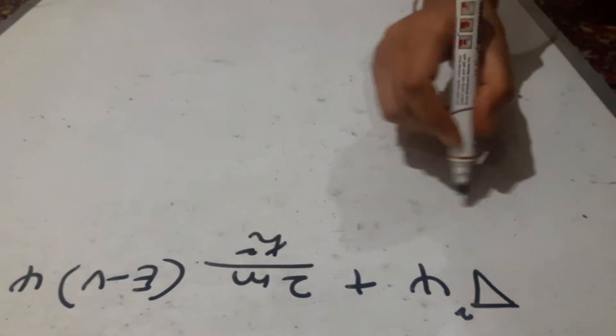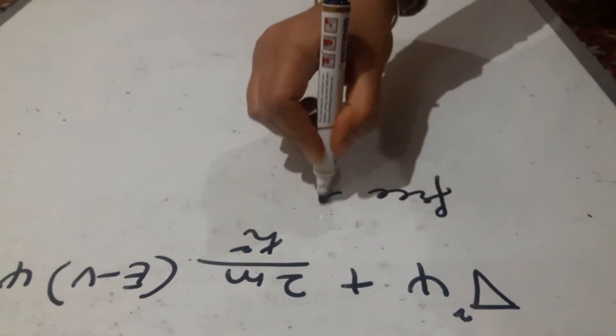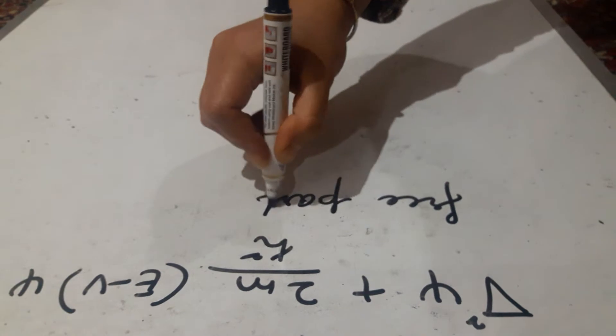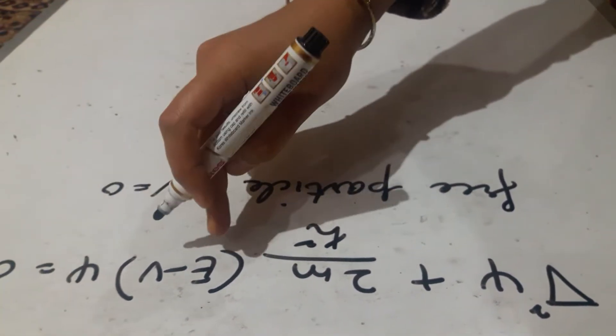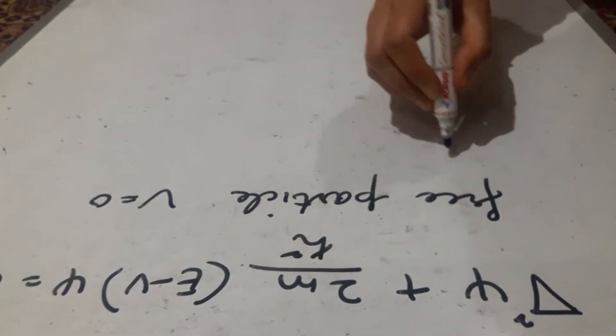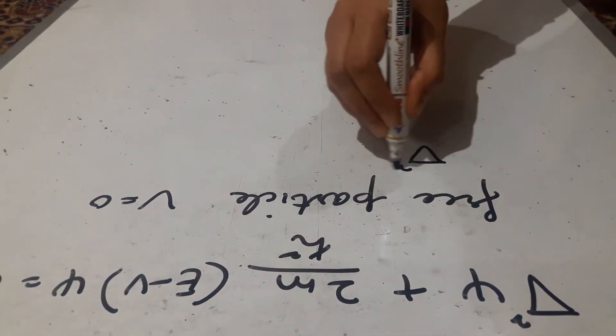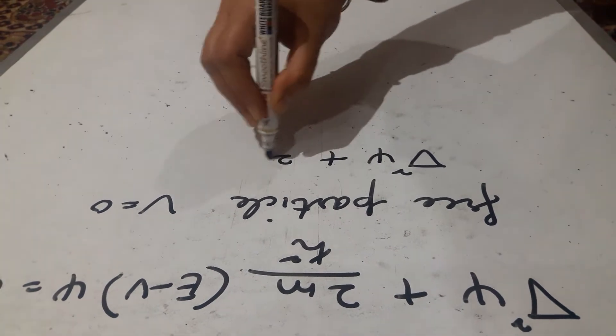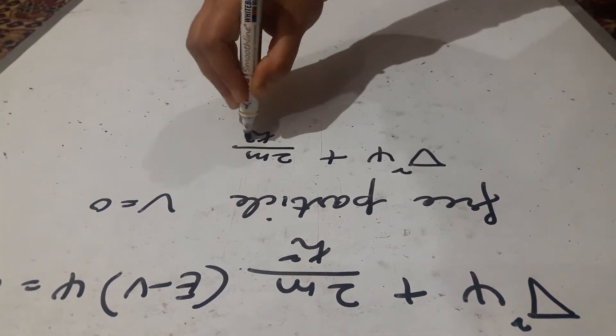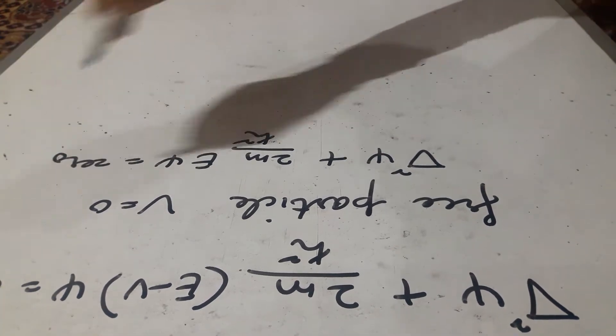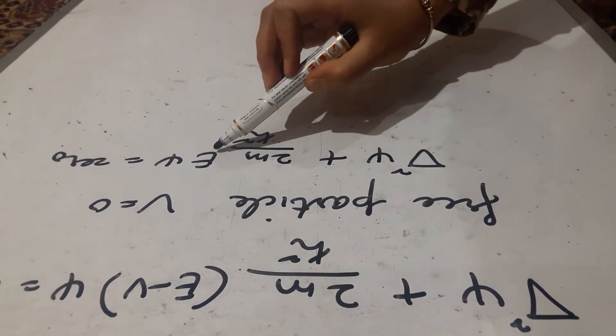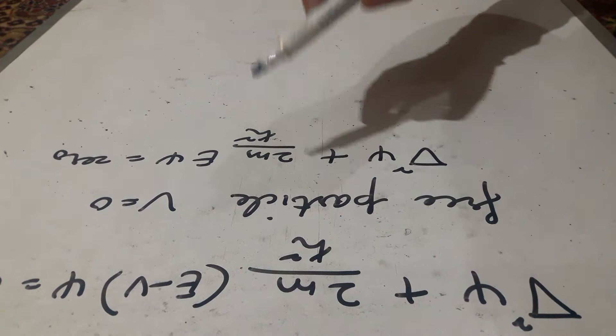If the particle is a free particle, whose potential energy is 0 and whose energy is wholly kinetic, this equation gets modified as del square psi plus 2m by h cross square e psi is equal to 0. You have to remember that this energy term is wholly kinetic and not potential.